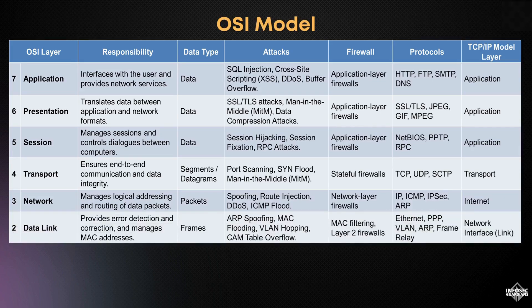Layer 2, the data link layer, handles error detection and correction while managing physical addressing through MAC addresses. This layer formats data into frames for transmission, and is susceptible to attacks like ARP spoofing and MAC flooding.